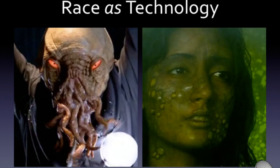For both species, their physical characteristics — the clones' blemishes and the Ood's external hybrids — are used as signifiers of inferiority. But the existence of these different races is itself technologically mediated.